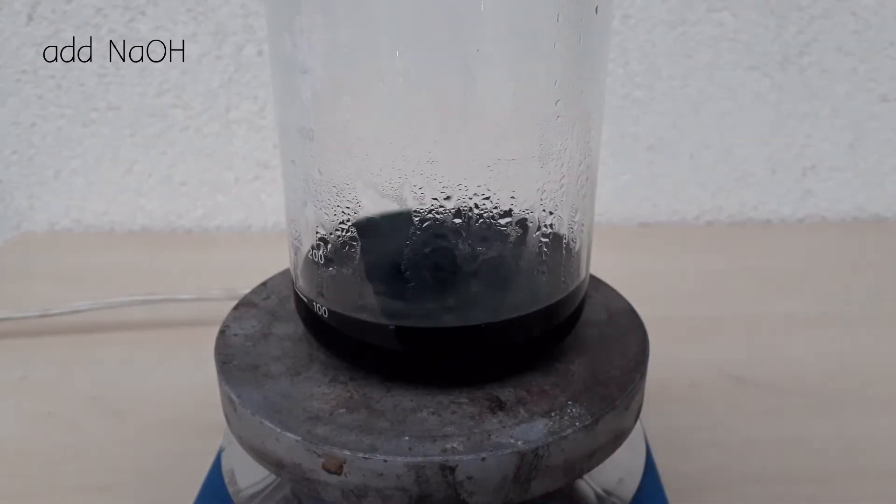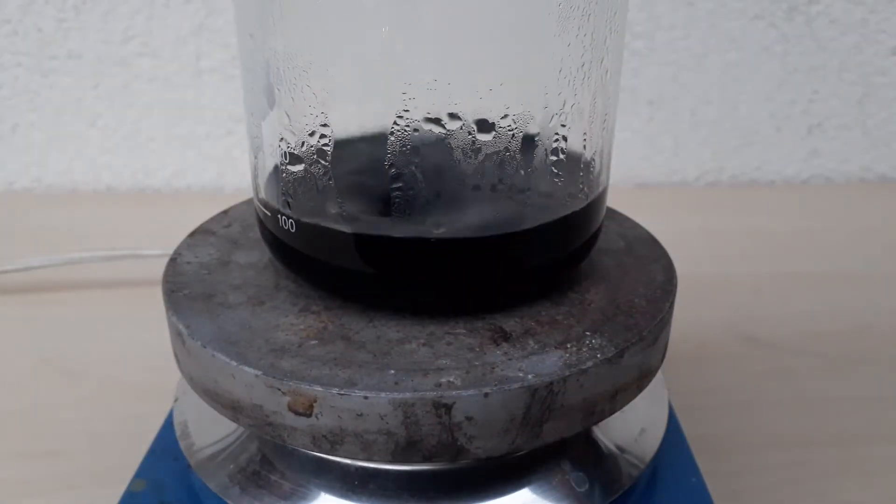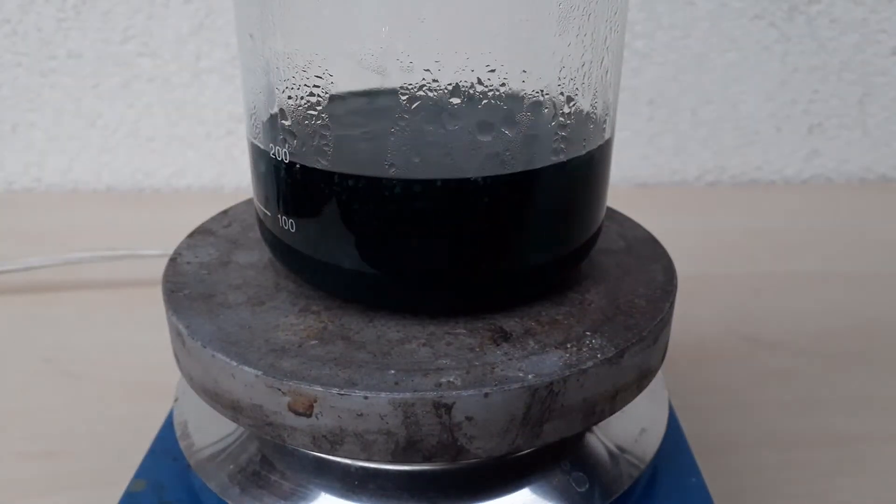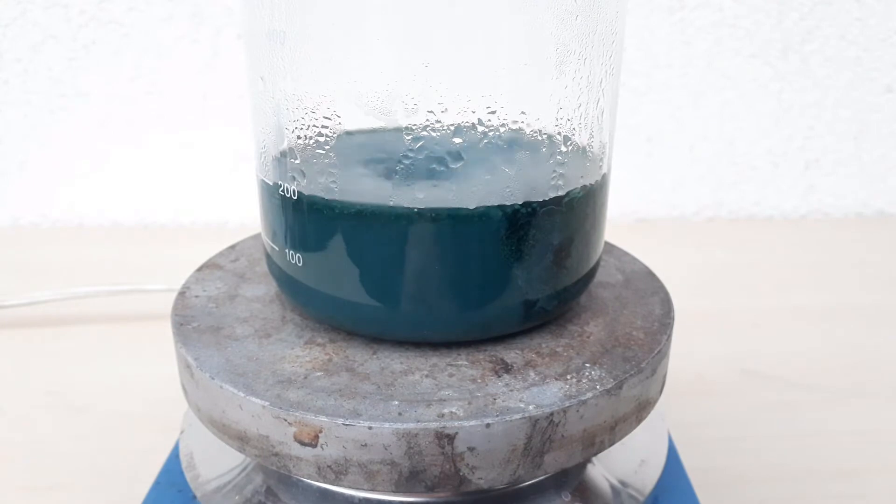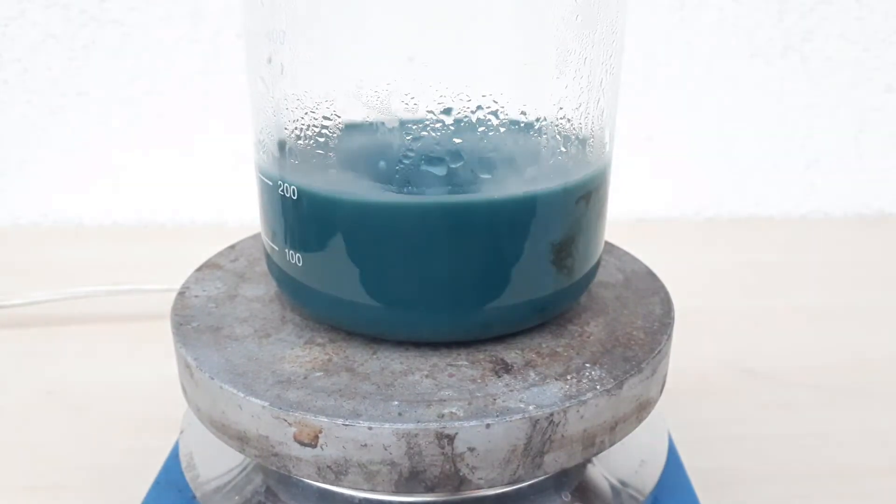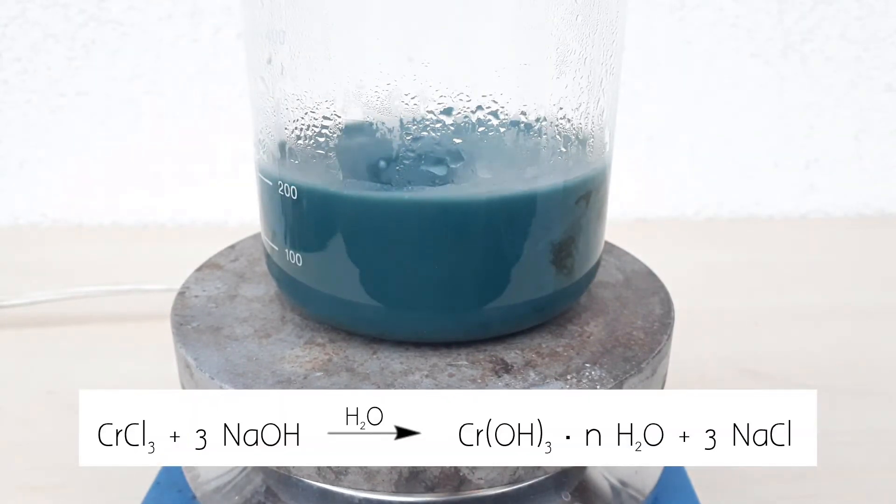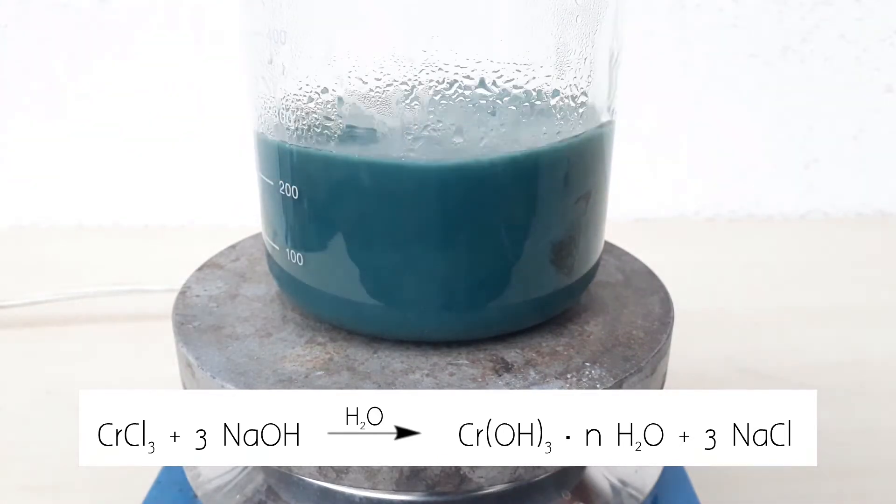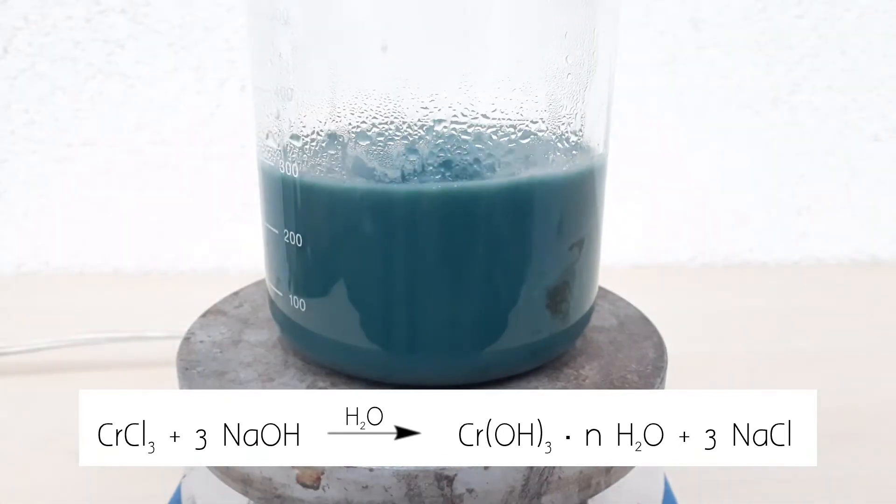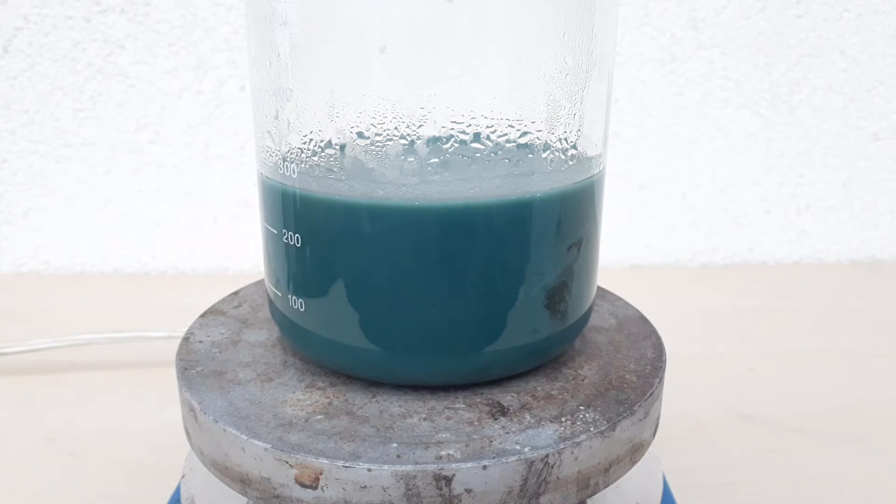I transferred the solution to an even bigger beaker and then slowly started adding a solution of sodium hydroxide. You can see the nice flocculent material that precipitates out of the solution, and this is chromium hydroxide hydrate. As I add more sodium hydroxide, the solution gets thicker and thicker and takes on this greyish green color.